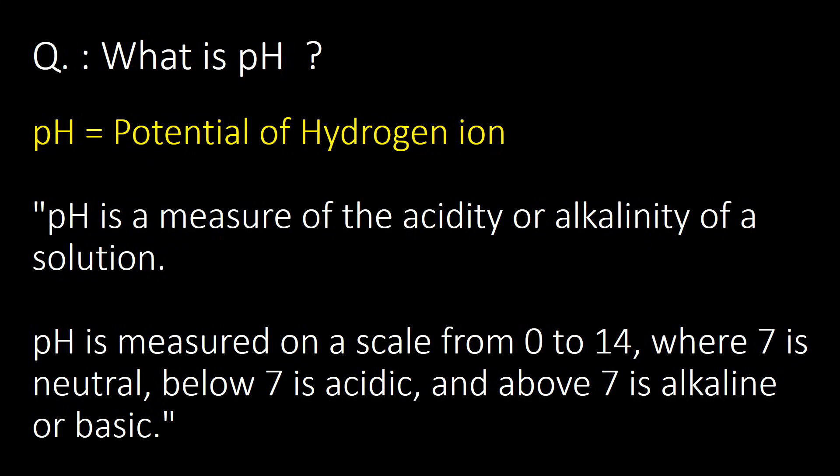What is pH? pH is the potential of hydrogen ion. pH is a measure of the acidity and alkalinity of a solution. pH is measured on a scale from 0 to 14, where 7 is neutral, below 7 is acidic, and above 7 is alkaline or basic.